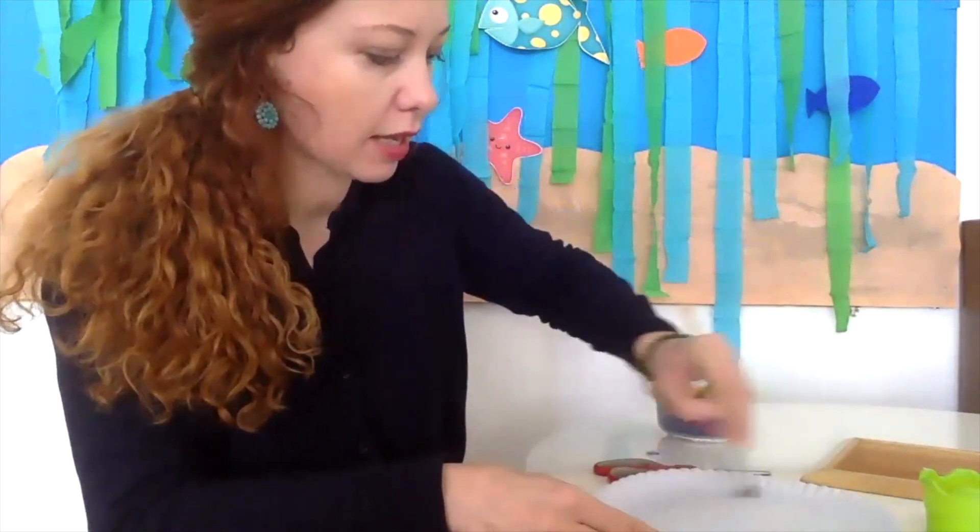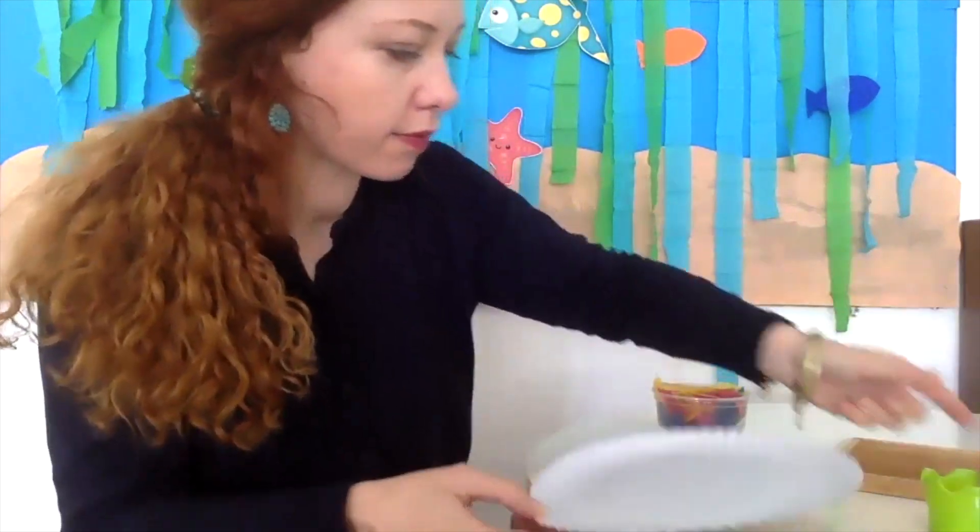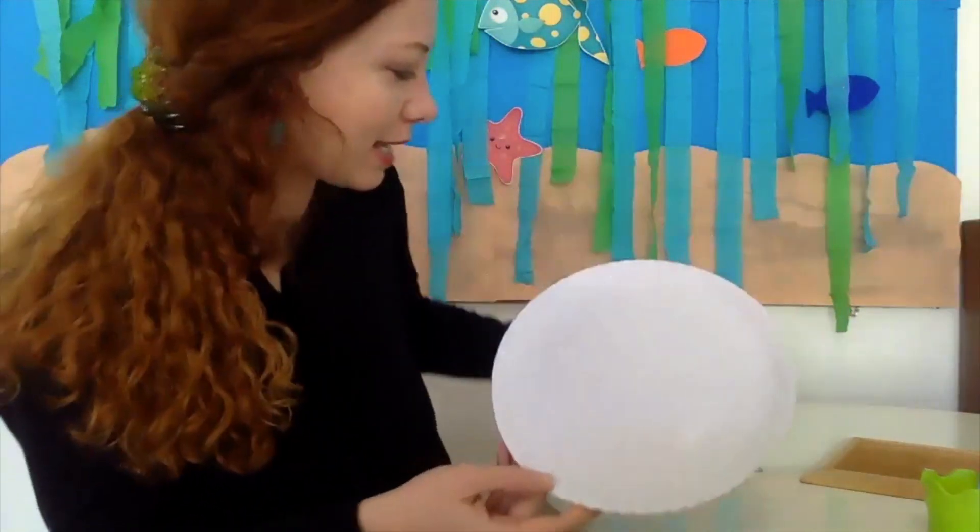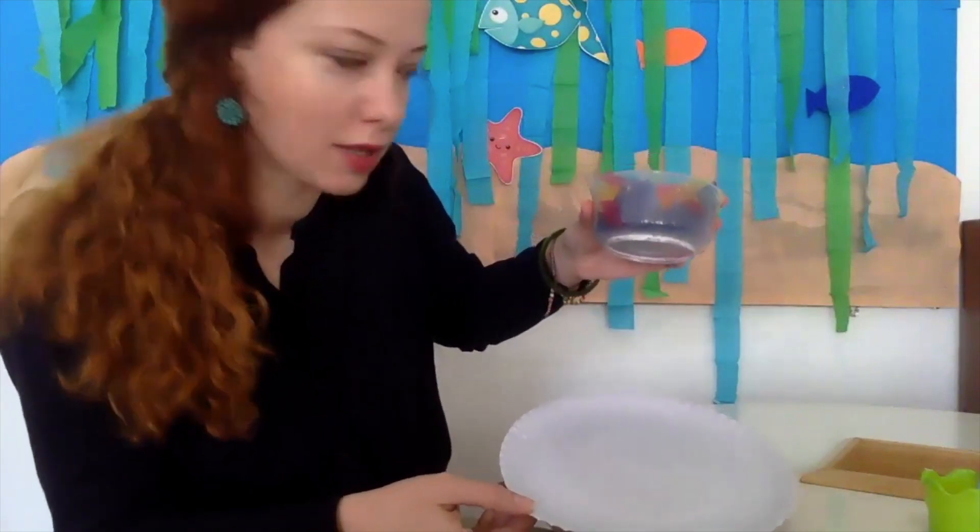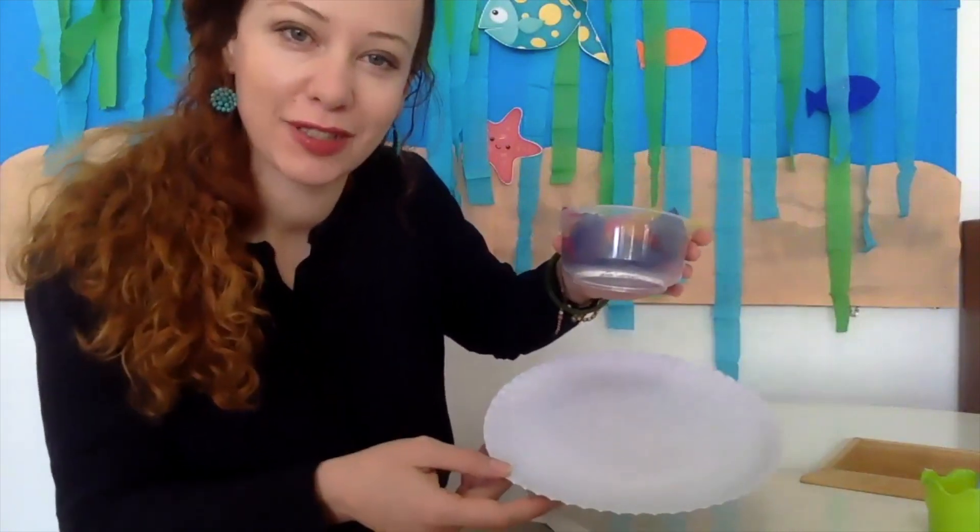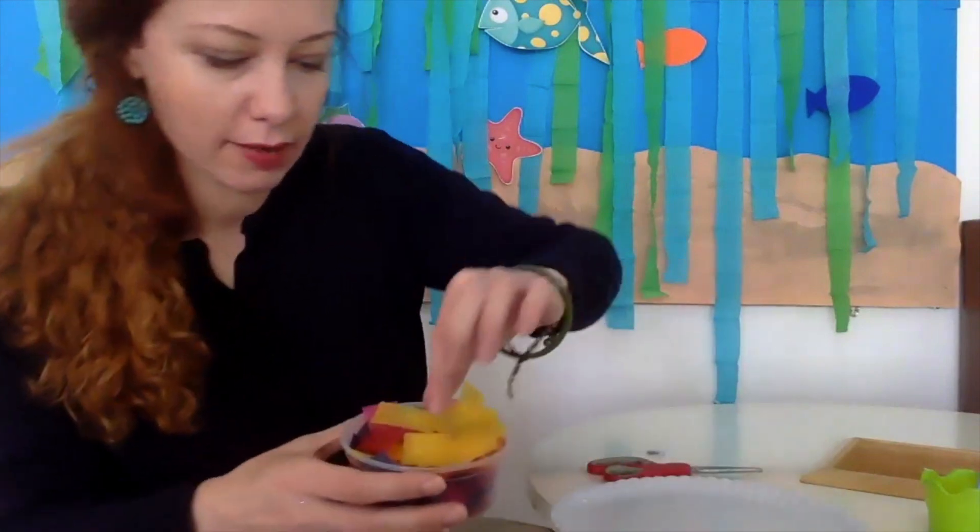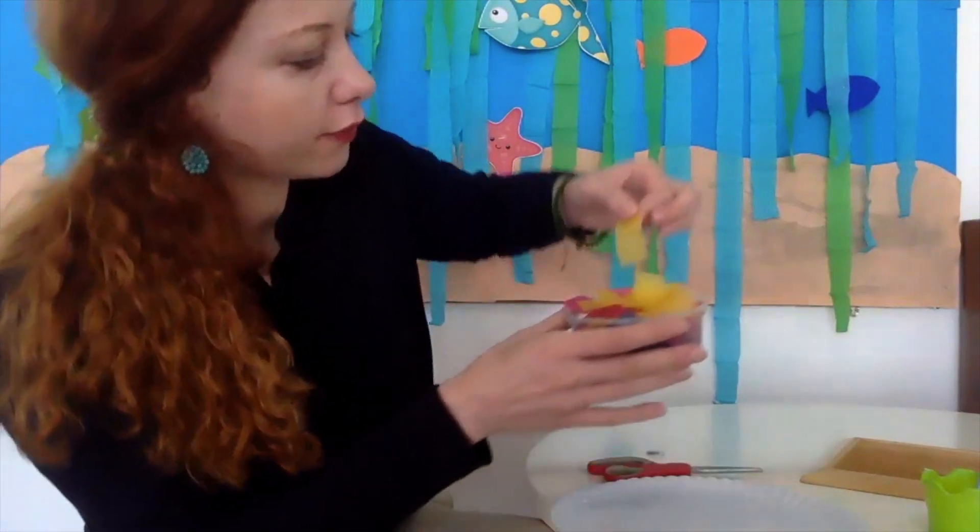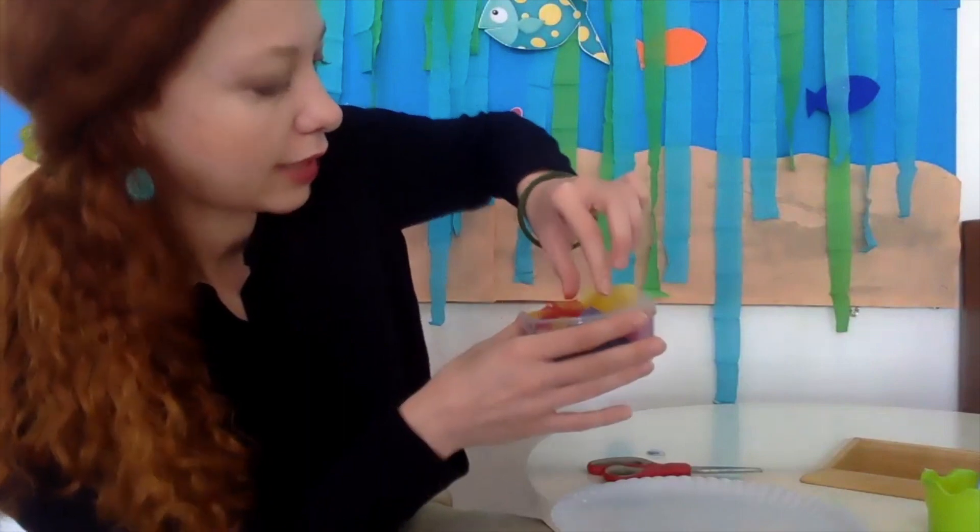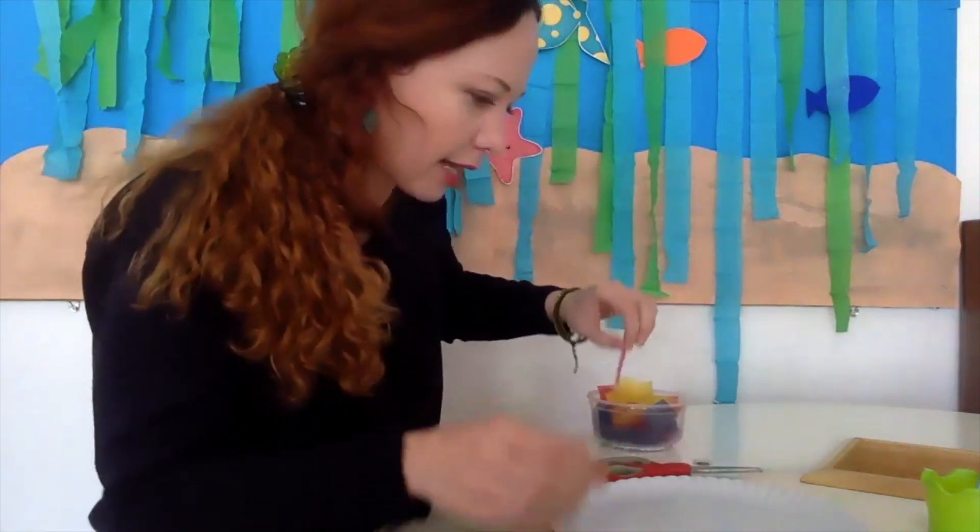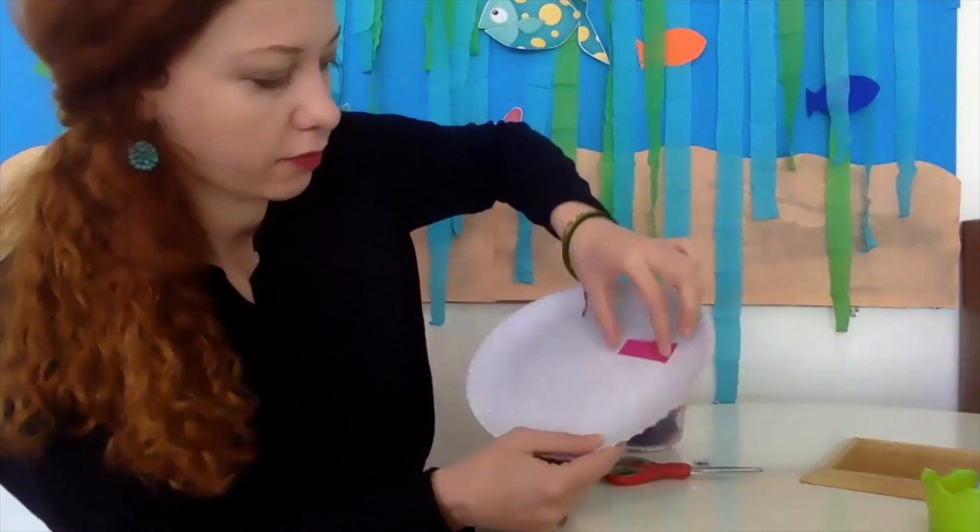When all your paper plate is covered in glue, you can go ahead and add some tissue paper because you want your tropical fish to be colorful and beautiful. That's why we prepared some colorful rectangle pieces of tissue paper. You can add them one by one. I'm going to add the pink one.